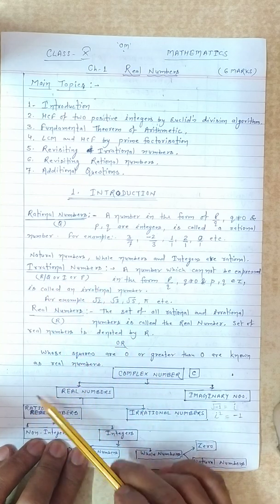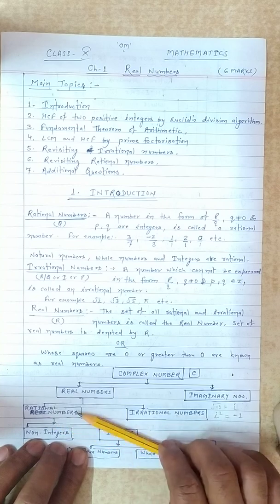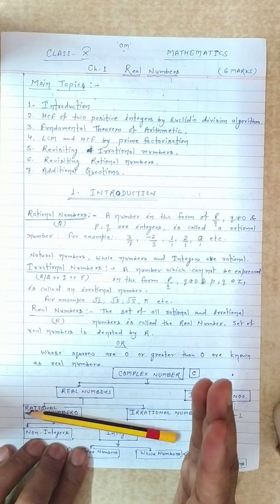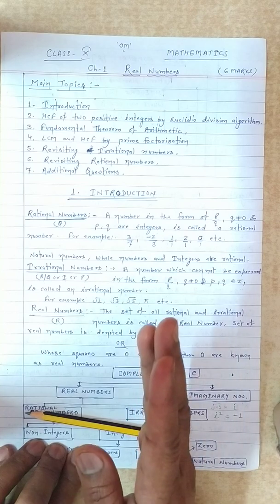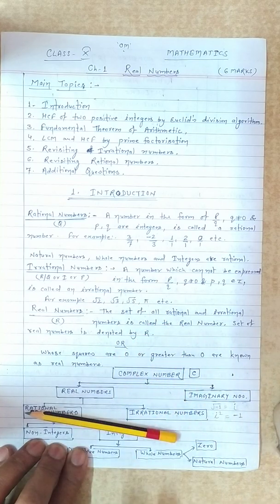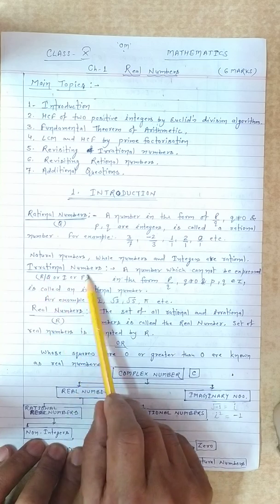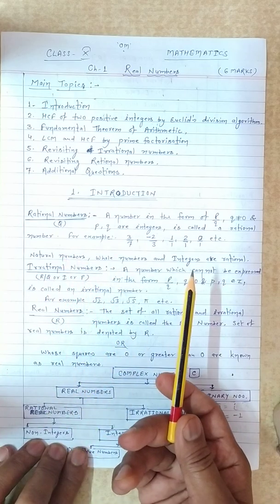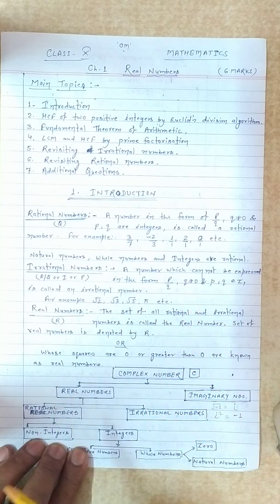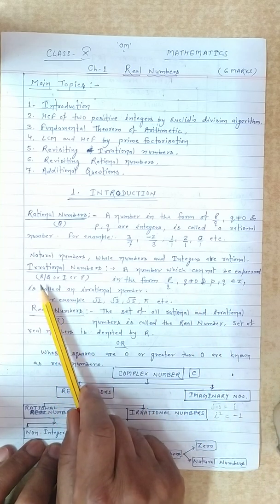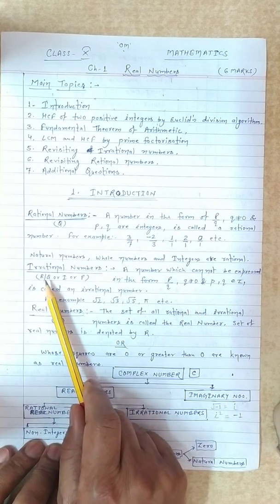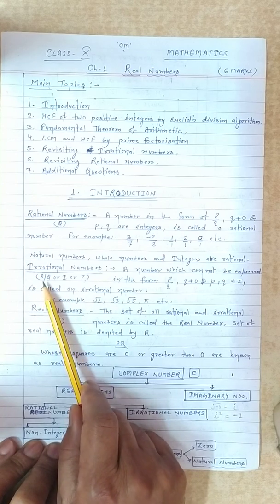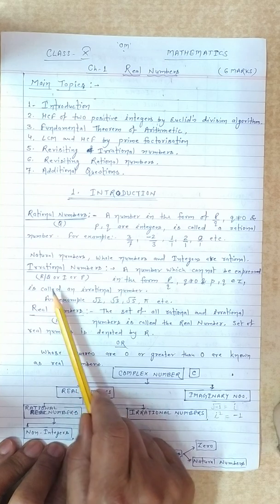In general, real numbers are the combination of rational and irrational numbers. There is no particular boundary — if you combine rational and irrational numbers together, that forms the set of real numbers.